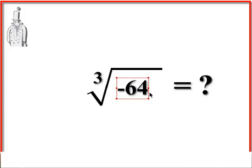What is the cubic root of negative 64? Same thing. We need three numbers. They have to be the same number such that when you multiply them, it's going to be negative 64.